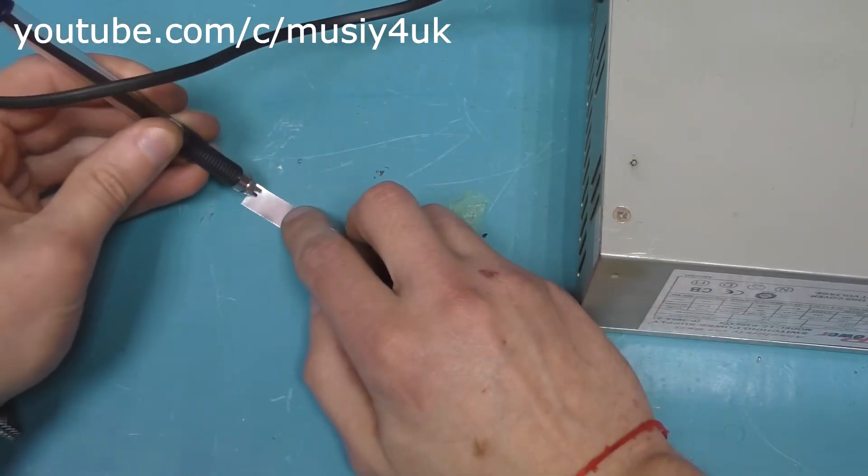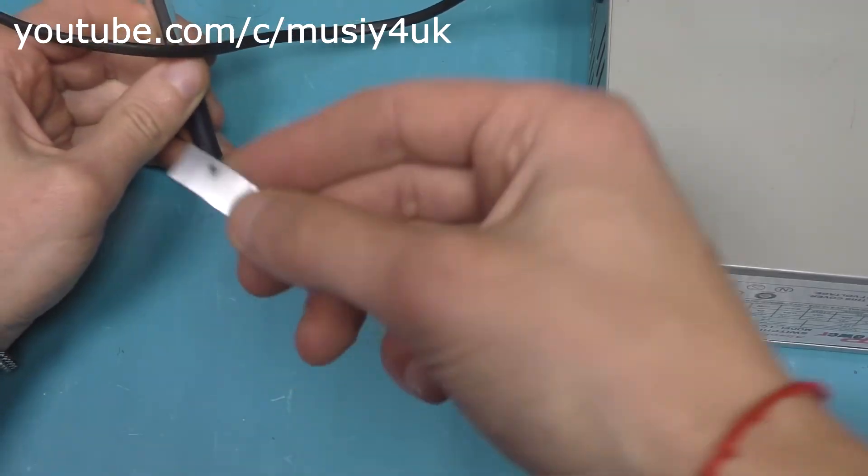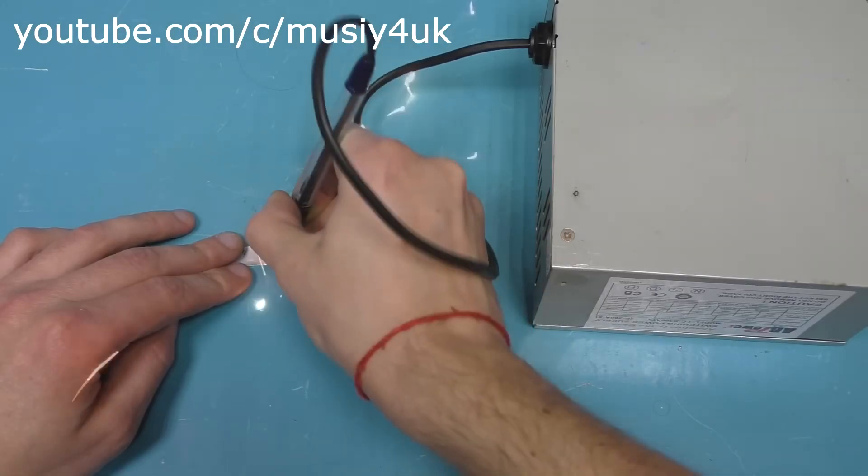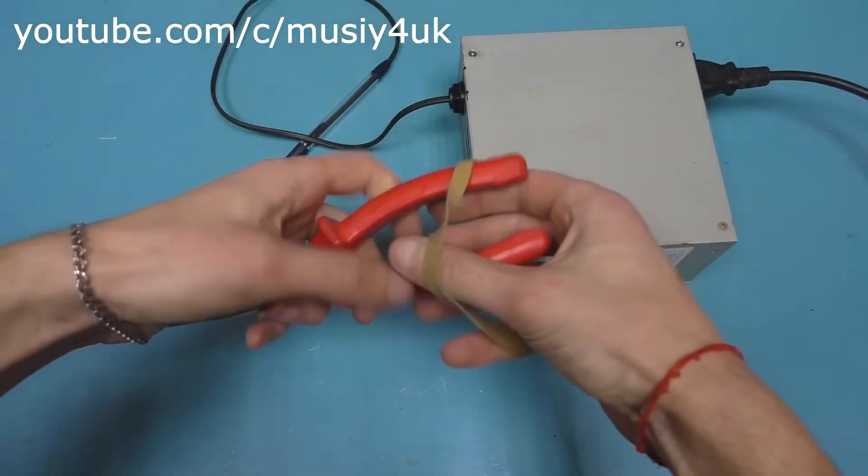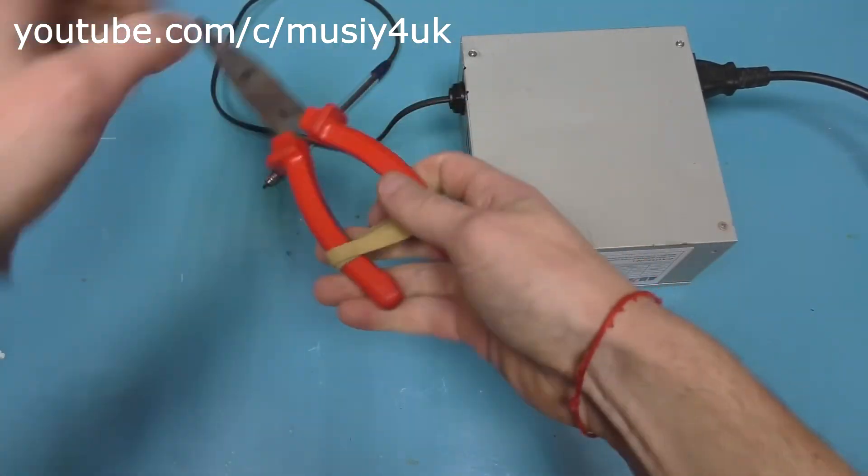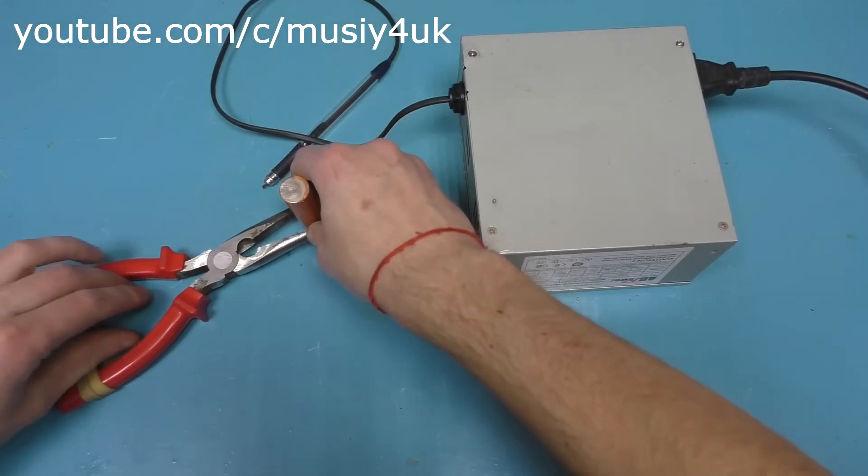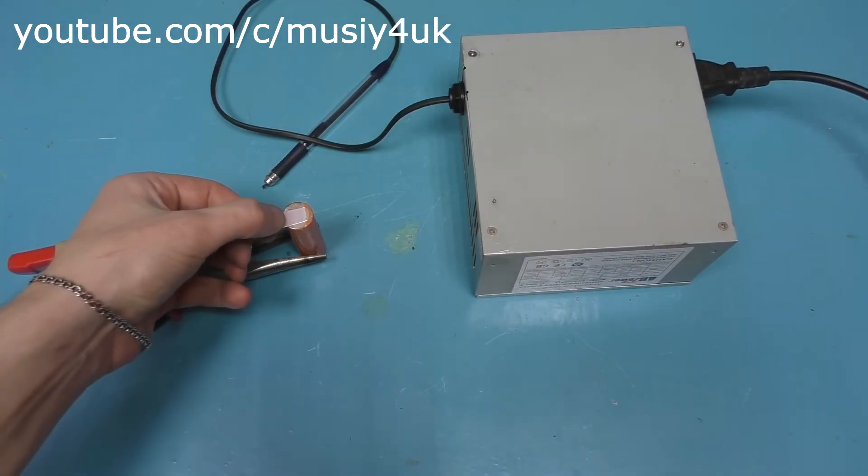Now let's try a thinner strip. As you can see it burns right through it. Now let's test if this homemade device can handle its intended purpose. Namely, connecting rechargeable batteries of the 18650 type since you don't connect them with a soldering iron but with spot welding.